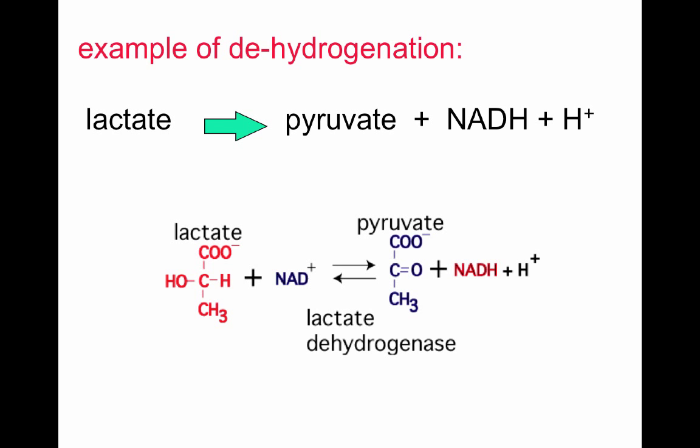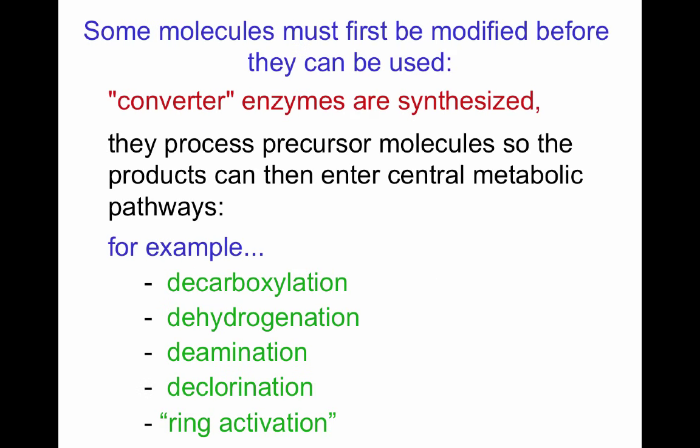For example, deamination of glycine generates acetate and ammonia; deamination of alanine generates pyruvate and ammonia. The ammonia is released and fuels the nitrogen cycle. Acetate and pyruvate are used for energy generation or anabolic reactions. Dehydrogenation removes a proton: for example, lactate by dehydrogenation produces pyruvate plus NADH and a proton, mediated by the enzyme lactate dehydrogenase. Converting enzymes further modify monomers so that useful intermediates can be used during anabolic or catabolic reactions.